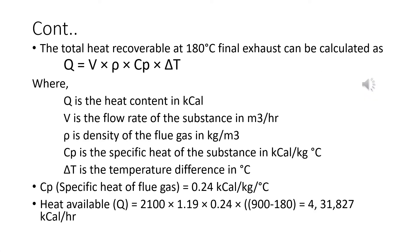Total heat recoverable at 180 degrees Celsius final exhaust can be calculated as Q = V × ρ × Cp × ΔT, where Q is the heat content in kilocalories, V is the flow rate of the substance, ρ (rho) is the density of the flue gas — a constant value of 1.19.